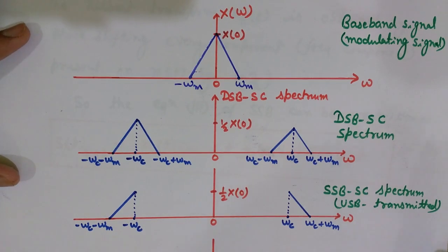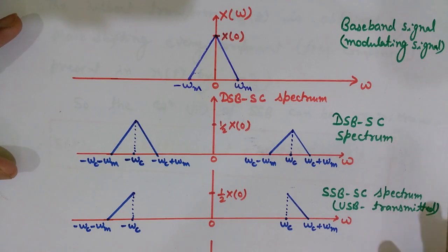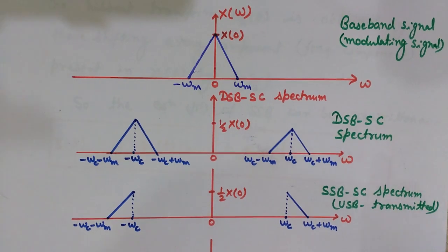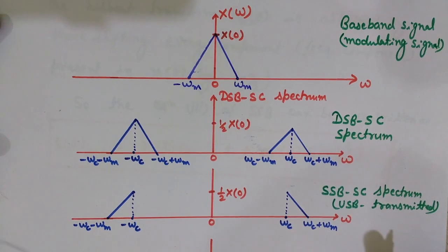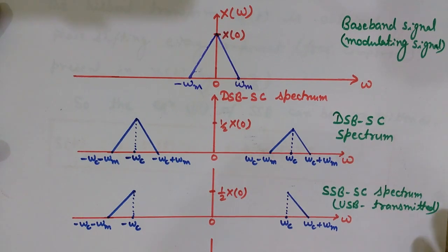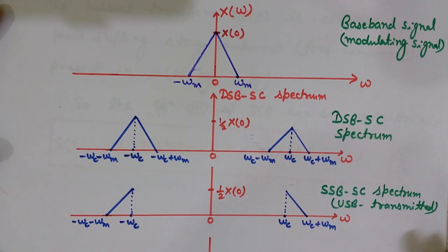That covers the basics, frequency spectrum, and derivation of the SSB-SC wave equation in two forms — the general Hilbert transform format and the trigonometric expansion format. If you found it useful, please click the like button and share the video. Don't forget to subscribe to Engineering Made Easy. In the next videos we will cover vestigial sideband modulation and how to generate SSB signals.